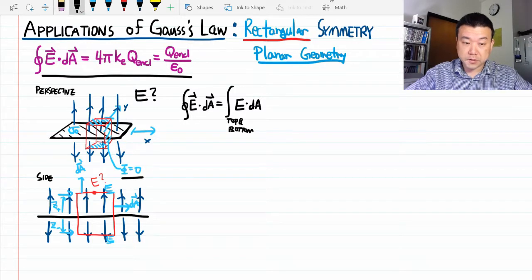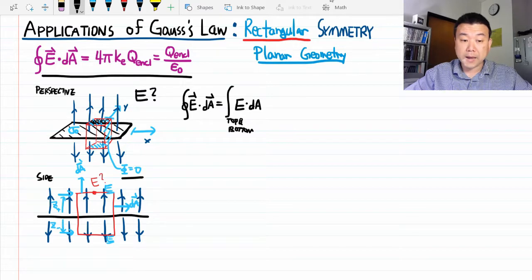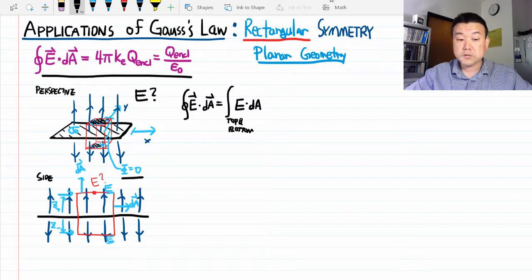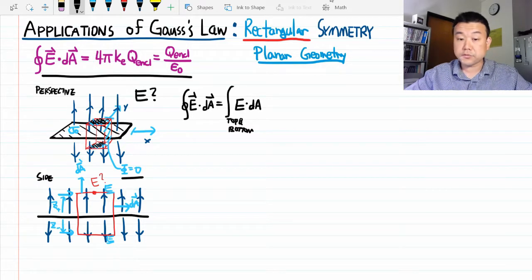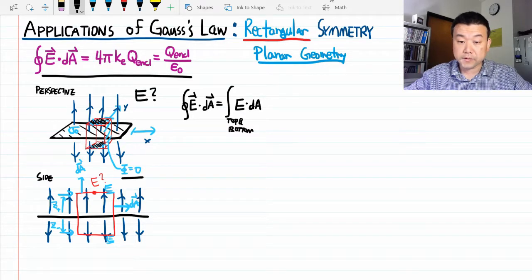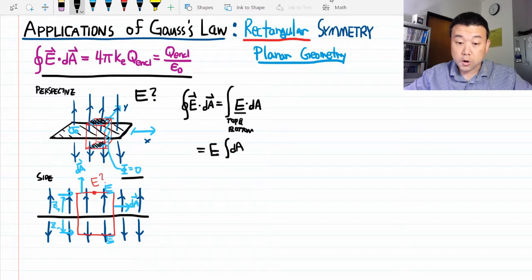And as we went over, along the top surface, the electric field has to be constant as to obey the translational symmetry. And the electric field along the top surface has to equal the electric field along the bottom surface so that the reflection symmetry is obeyed. What that adds up to is that this electric field value here is a constant. I can pull it out of the integral. So it's an integral over the area element of the top and bottom surfaces.